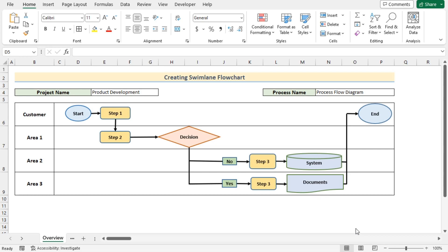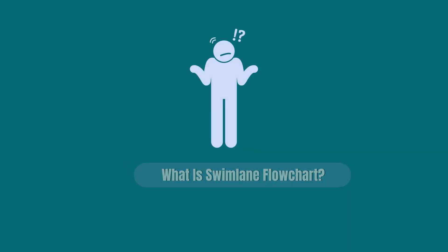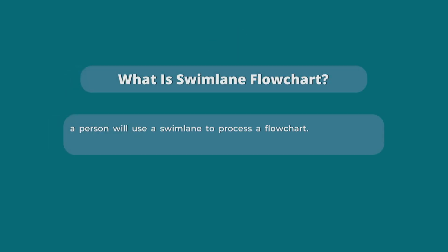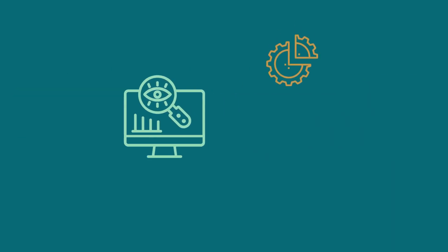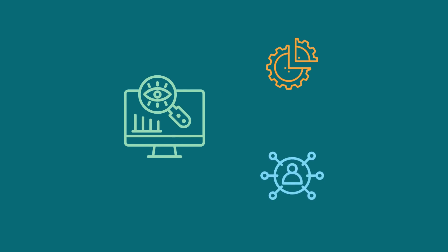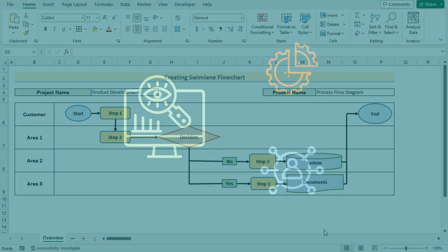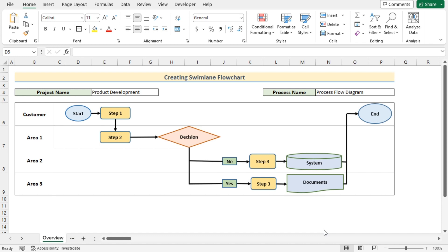Let's talk about what a swim lane flowchart is. A person will use a swim lane to show the process of a certain business — it visibly separates task sharing and responsibilities for a certain company. In this tutorial we want to create a swim lane flowchart similar to the one shown on screen, and we will be using Microsoft Excel 365. So without any further discussion, let's get started.